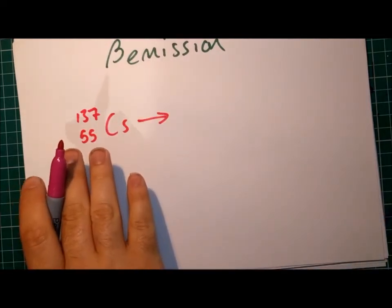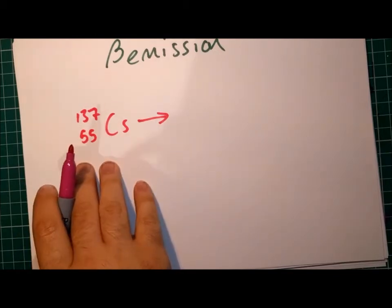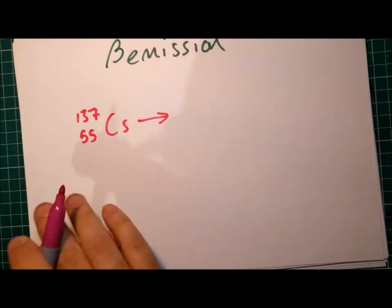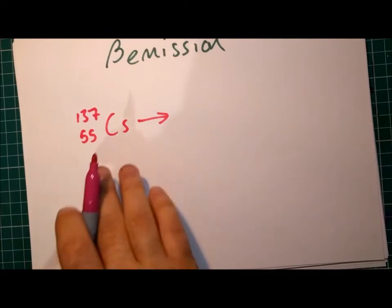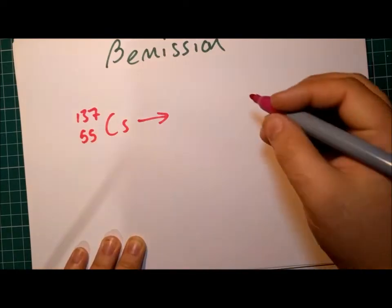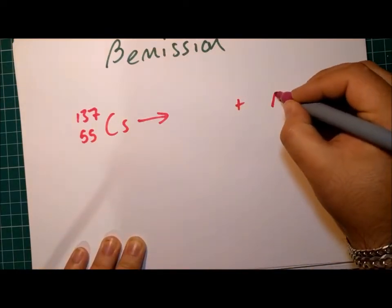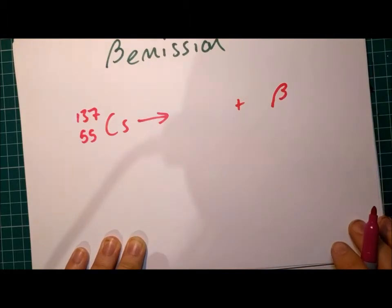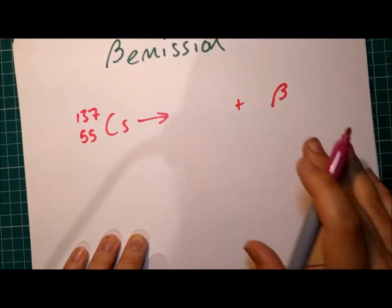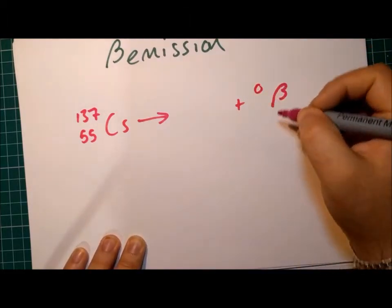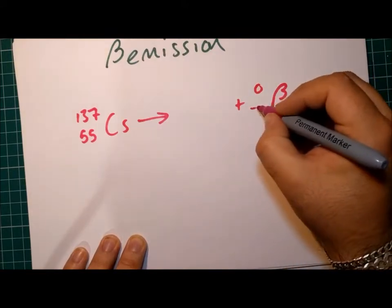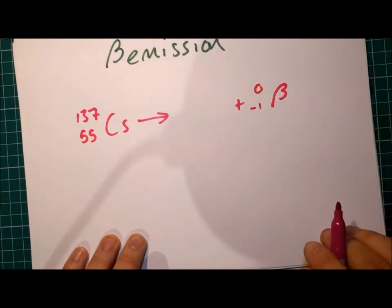So before anything happens, we have an atom of cesium, cesium nucleus, untouched, but unstable. As it undergoes radioactive decay, it emits a beta particle. So a beta particle has effectively zero mass and it has a charge of minus one, just like any other electron.